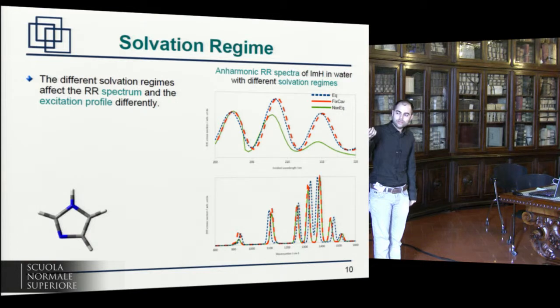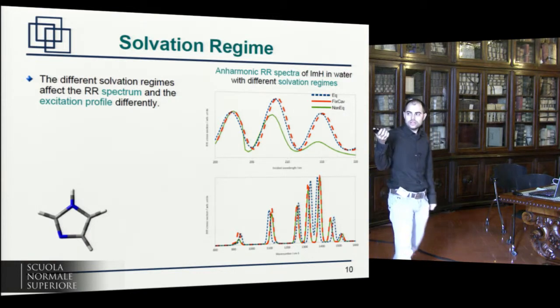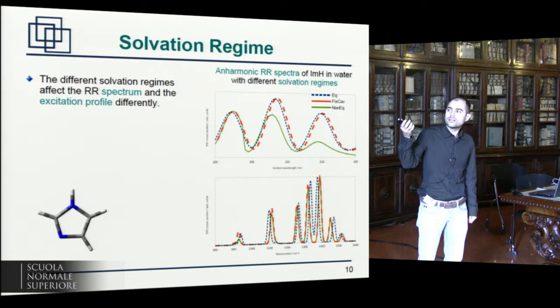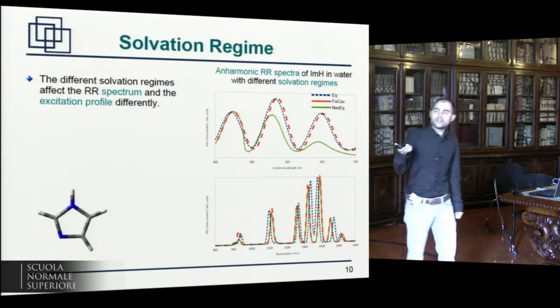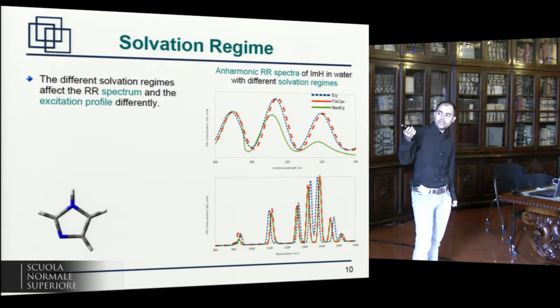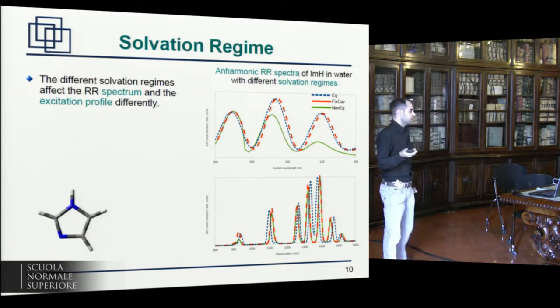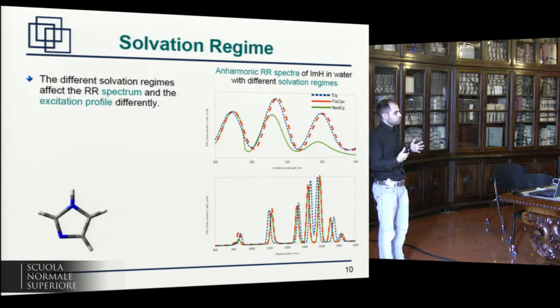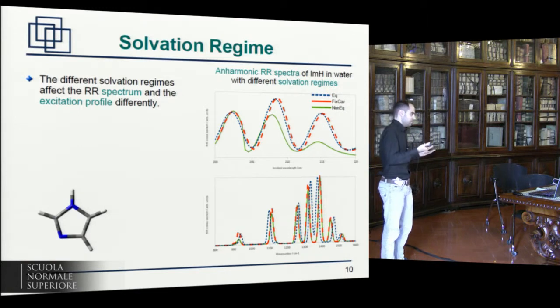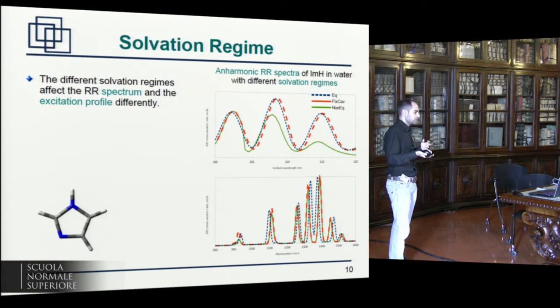So you can see there are some very important differences in both the excitation profile and the Raman spectra. In the Raman spectrum, for example, there is a shift in the frequencies when I add fixed cavity or non-equilibrium effects, and there is also an effect on the relative intensities. So this is just to show that in addition to actually computing the observable for the molecule in a solvent or an environment, you also have to ask yourself, what is the solvent regime, and what happens to the environment during this spectroscopy.